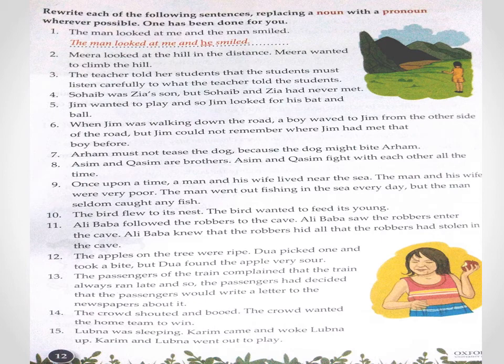Number four: 'Shweb was Ziya's son but Shweb and Ziya had never met.' 'Shweb and Ziya' کی جگہ 'they' آ جائے گا کیونکہ دو نام ایک ساتھ آ رہے ہیں۔ Number five: 'Jim wanted to play and so Jim looked for his bat and ball.' دوبارہ آنے والے 'Jim' کی جگہ 'he' آ جائے گا۔